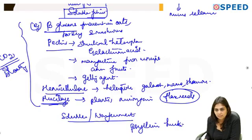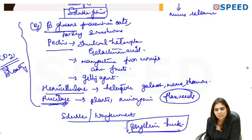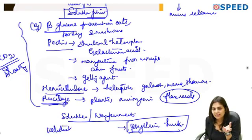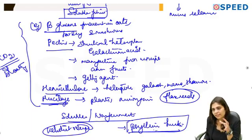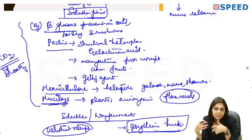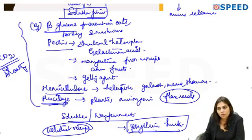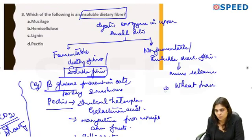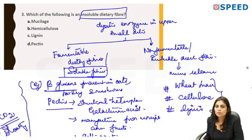Psyllium husk is added in almond breads and most keto diet recipes — it adds air to baked goods. It adds bulk to stools and helps in weight reduction because it is both soluble and non-fermentable. For insoluble, non-fermentable fibers, the examples include wheat bran and cellulose.